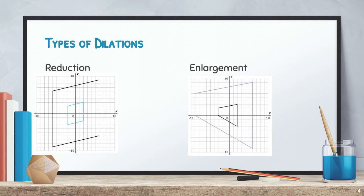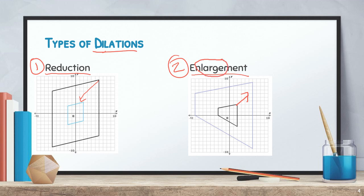There are different types of dilations: the reduction and the enlargement. For the reduction, if the black parallelogram was our original, the blue one is smaller — it got smaller. That is an example of a reduction; reduce means to get smaller. For the enlargement example, if the black one is our original and the purple one is after the dilation, we can see it got bigger. The word enlargement has the word 'large' in it, which means getting bigger — that's how you can tell the two apart.